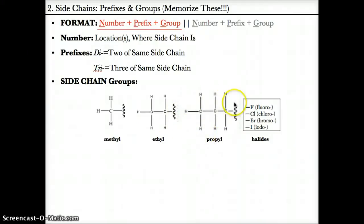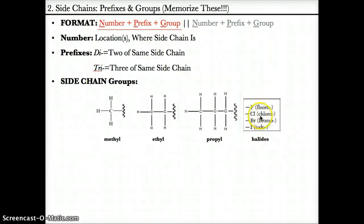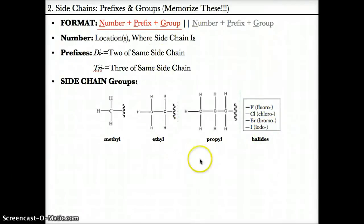Propyl is CH3-CH2-CH2: one carbon bonded to three H's, followed by one C bonded to two H's, and another C bonded to two H's, attached to the main chain. The four halides are the last four side chain groups: F or fluoro, Cl or chloro, Br or bromo, and I or iodo, all attached to the main chain. Please remember these prefixes and side chains so you can use them during the lesson.